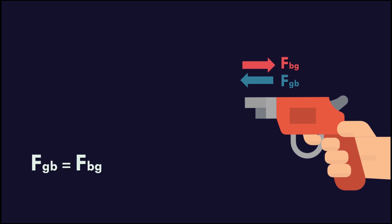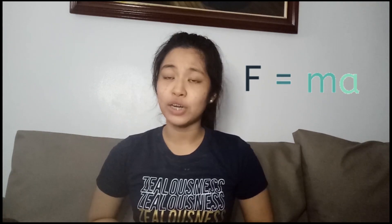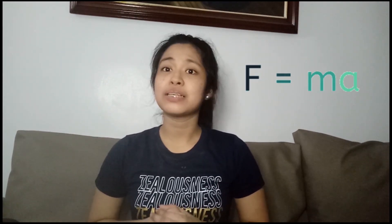But how come the bullet doesn't recoil backwards? That's because even if it exerts the same magnitude of force, its acceleration is not the same. Acceleration is force over mass. Therefore, Newton's law of interaction comes down to F equals ma, which is force equals mass times acceleration.